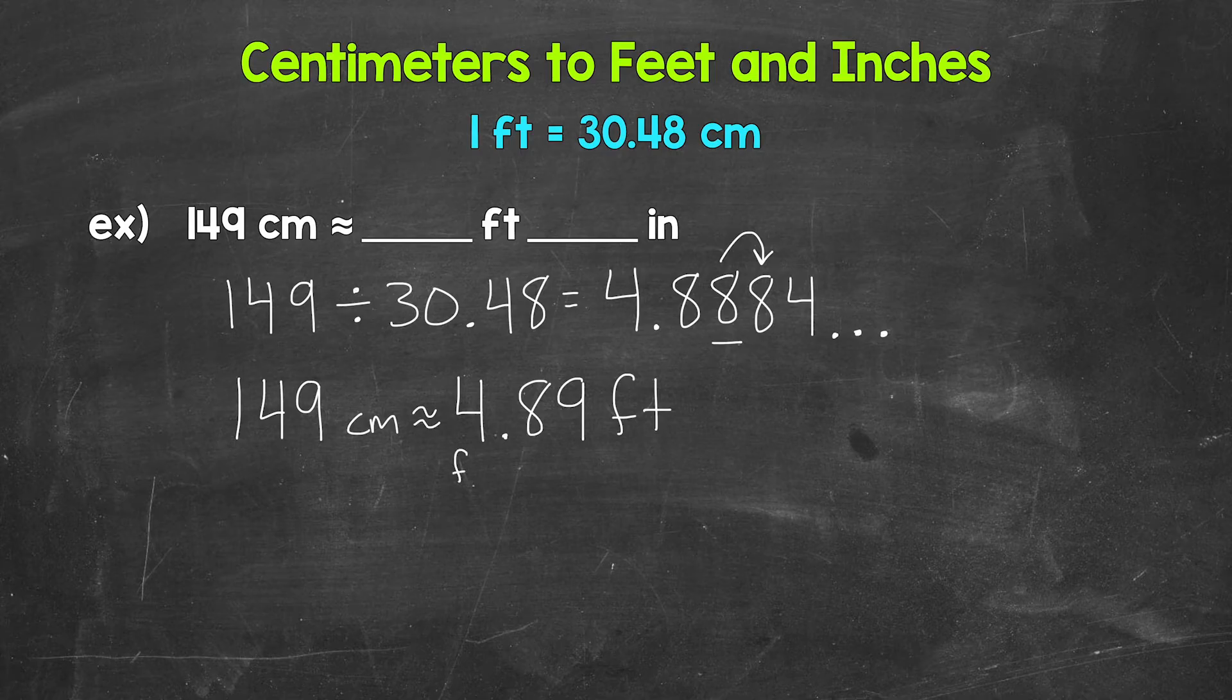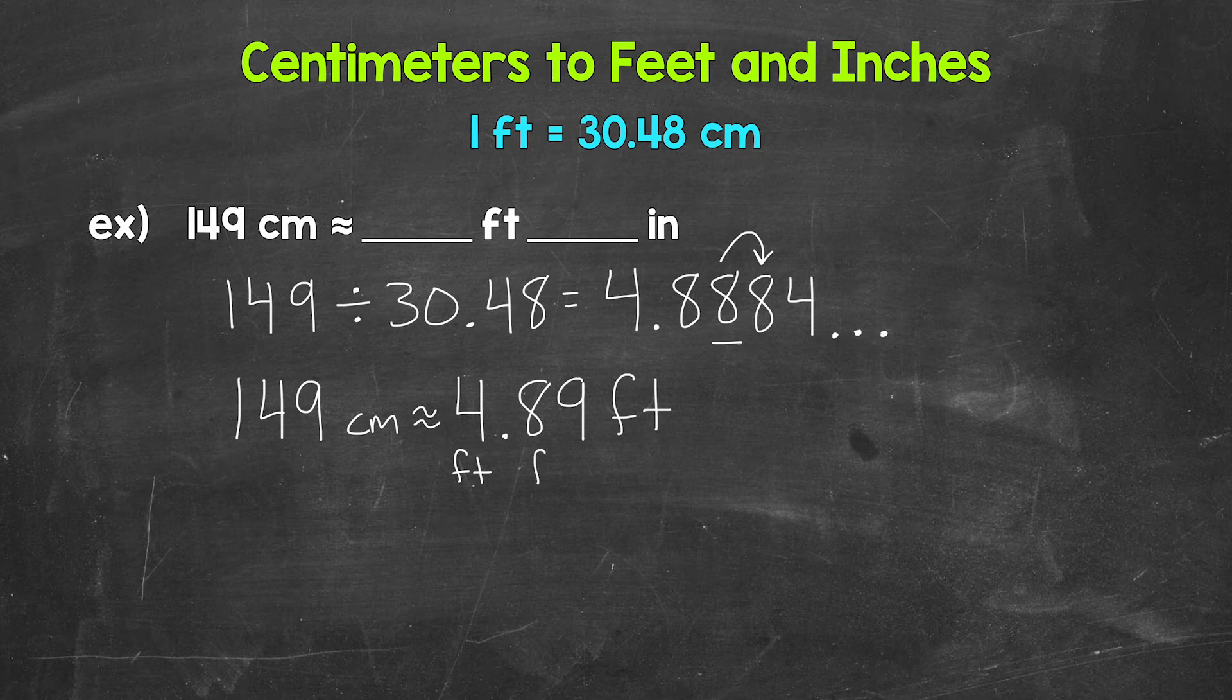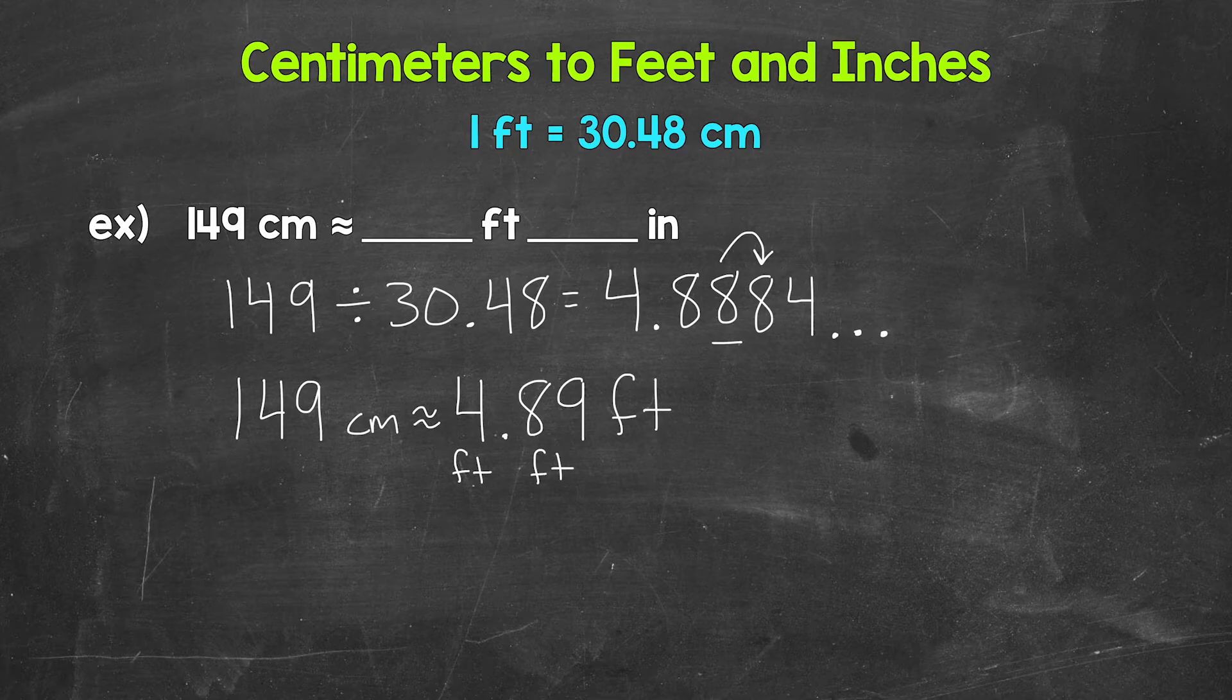Now moving on, let's think of this as 4 feet and then 0.89 feet. So we have 4 feet and then 0.89 of a foot. Not quite a whole foot there. So we need to convert that decimal of 0.89 to inches.